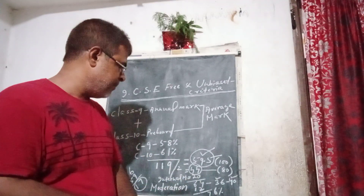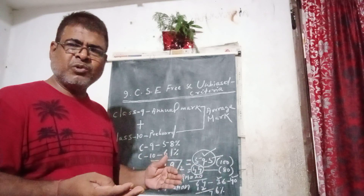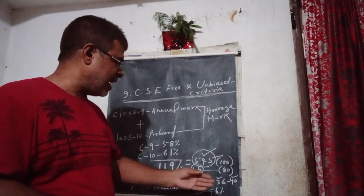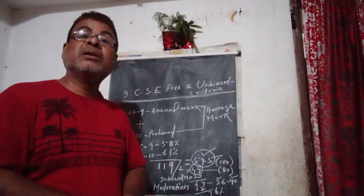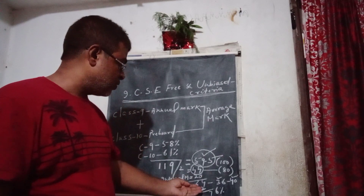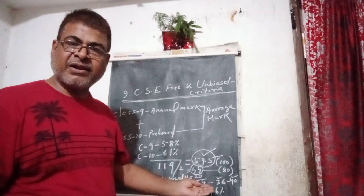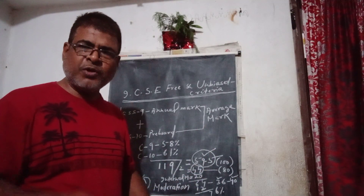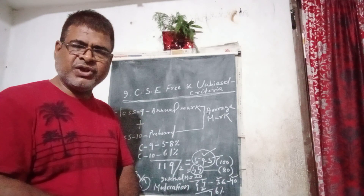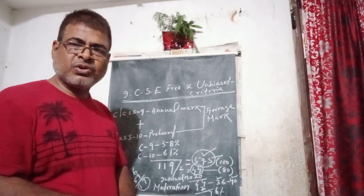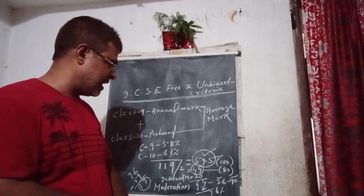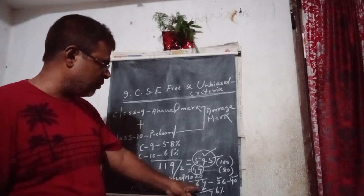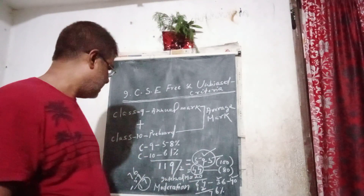The student got 64, so it is 36 less than 100. Now this is where the moderation policy comes in. The moderation criteria for the CISCE board says: 40% of 36 will be added as bonus. 40% of 36 equals approximately 12 marks. So 64 plus 12 equals 76.